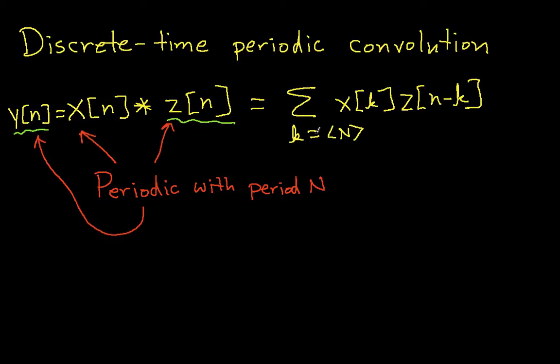It turns out that the formula for doing this looks a lot like the discrete time convolution. In fact, it looks exactly like the discrete time convolution, except you sum over one period rather than summing over K going from minus infinity to infinity. That's really the only difference when you're convolving periodic signals.